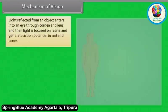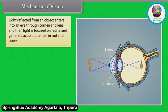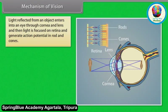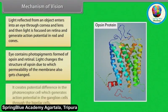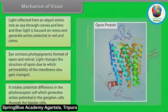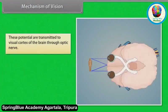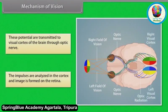Light reflected from an object enters the eye through the cornea and lens and is focused on the retina, generating action potentials in the rods and cones. The eye contains photopigments formed of opsin and retinal. Light changes the structure of opsin, causing the permeability of the membrane to change, creating a potential difference in the photoreceptor cell. This generates action potentials in the ganglion cells through the bipolar cells. These potentials are transmitted to the visual cortex of the brain through the optic nerve, where impulses are analyzed and an image is formed.